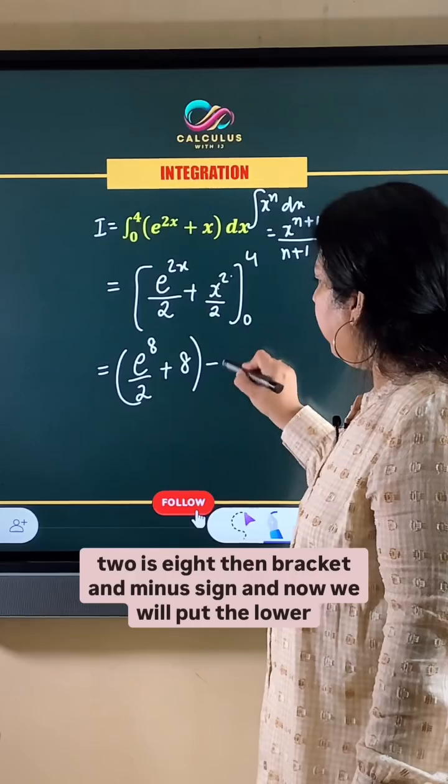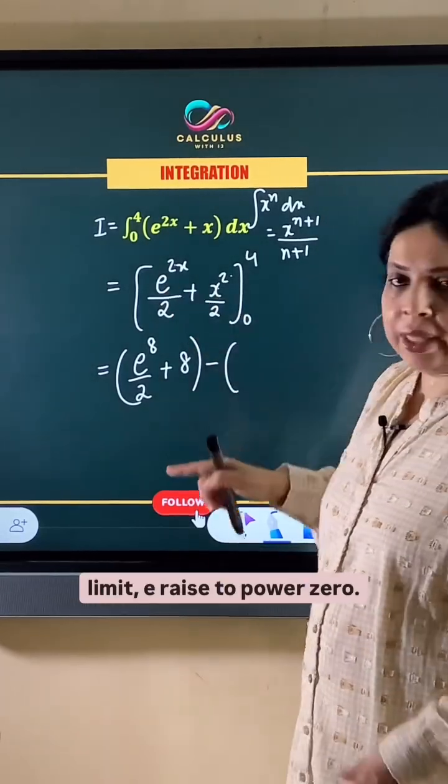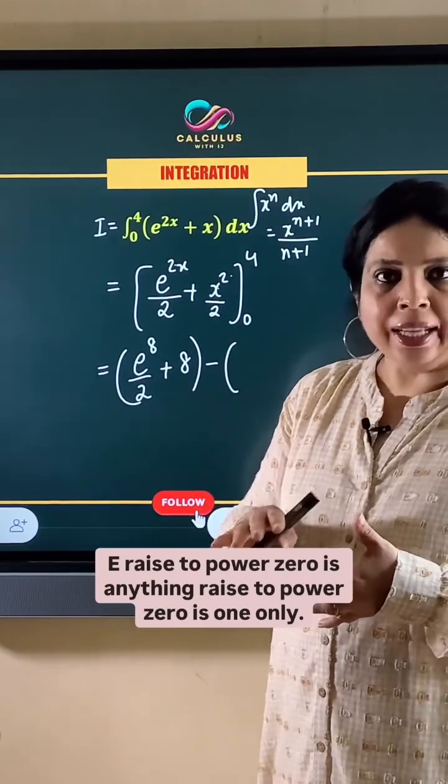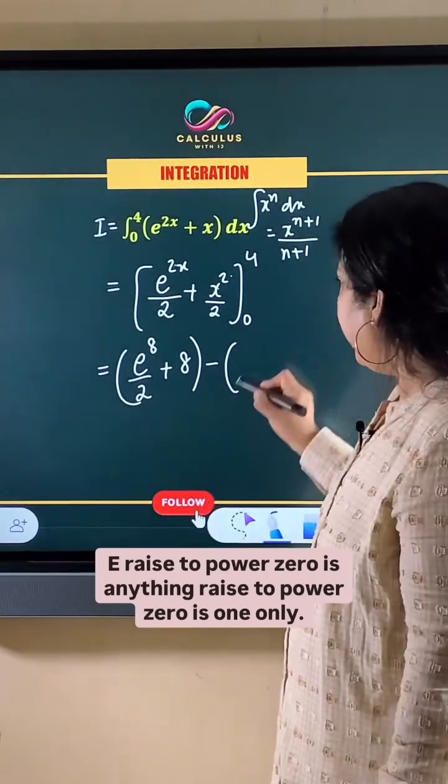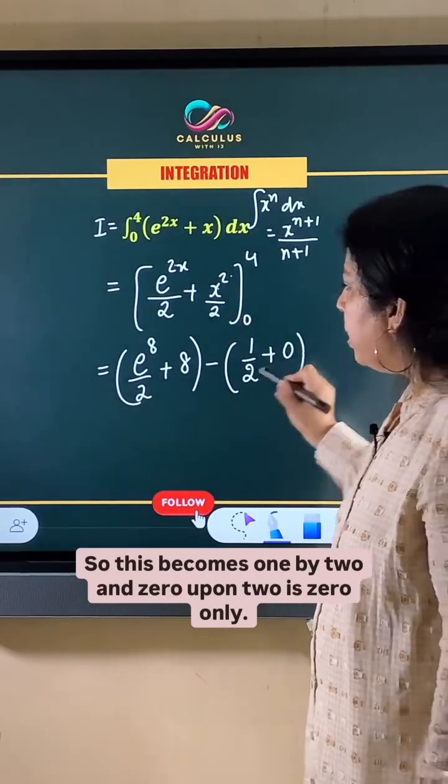Then bracket and minus sign. And now we will put the lower limit. E raised to power 0 is 1, so this becomes 1 by 2, and 0 upon 2 is 0 only.